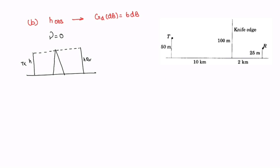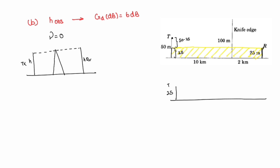In the given diagram, the transmitter and receiver are not at equal height. To apply the V equals zero condition, we subtract the minimum height from all elements. The receiver height is 25 m, which is the minimum. Subtracting 25 from everything: the new receiver height becomes 0, the new transmitter height becomes 50 minus 25 equals 25 m, and the new obstacle height becomes 100 minus 25 equals 75 m.